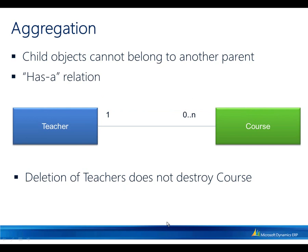The next type of relation is called aggregation. In this type of relation, the child objects cannot belong to another parent. So this can be thought of as a 'has a' relation. So we can say a course has a teacher. Deletion of a teacher does not necessarily destroy all of the course entities. This type of relation is called aggregation.